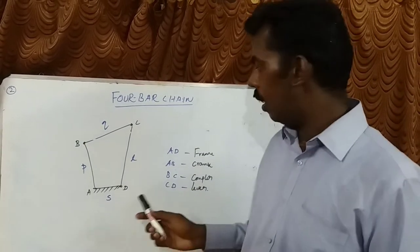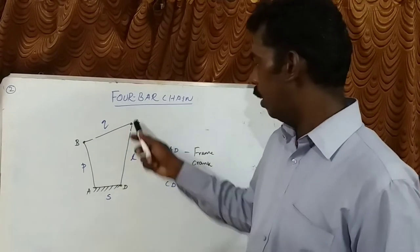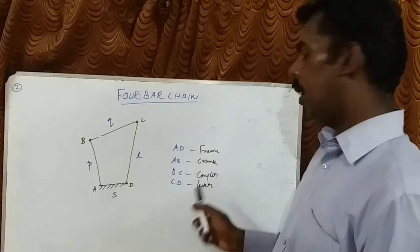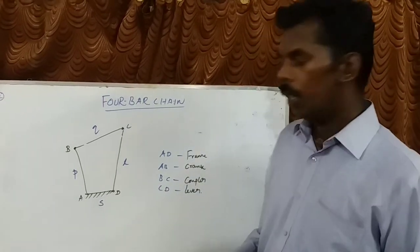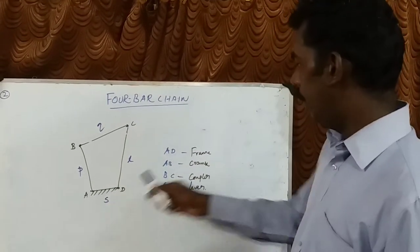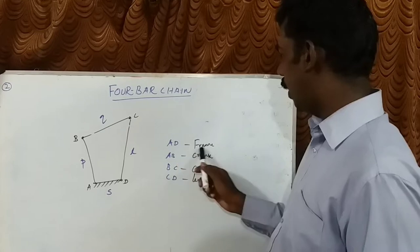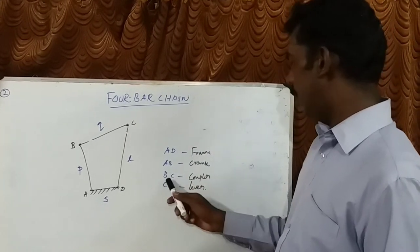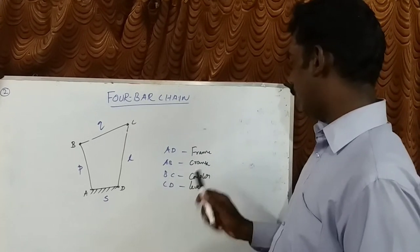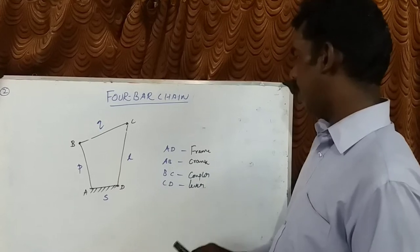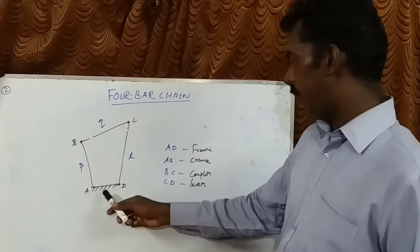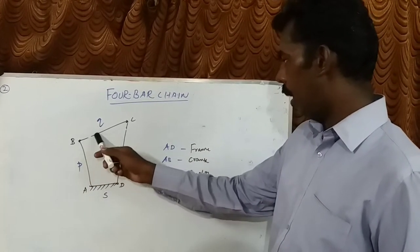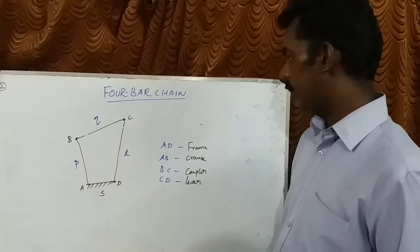The last one is the 4th link, calling it the lever. The 4th link CD is the lever. To summarize: AD is the fixed link called the frame, AB is the crank, BC is the coupler, and CD is the lever.